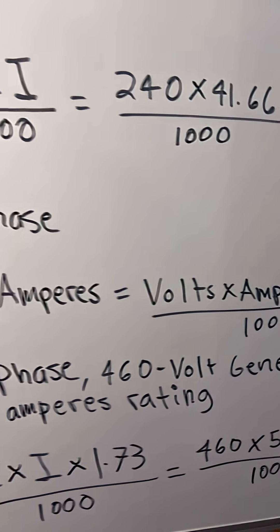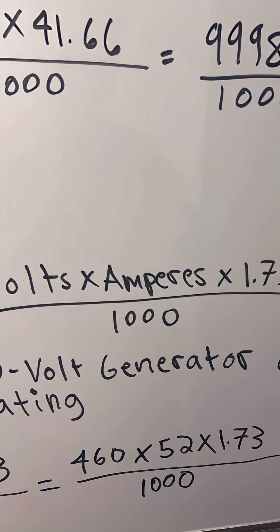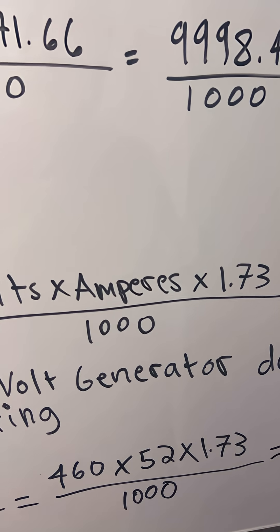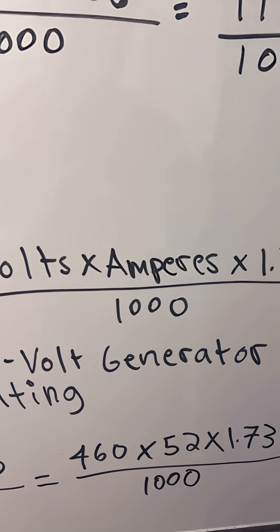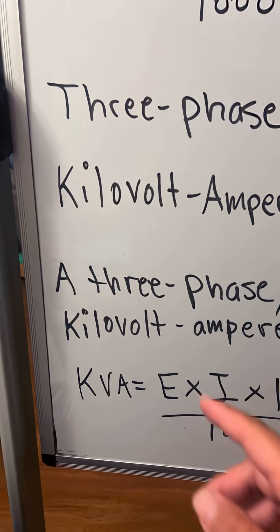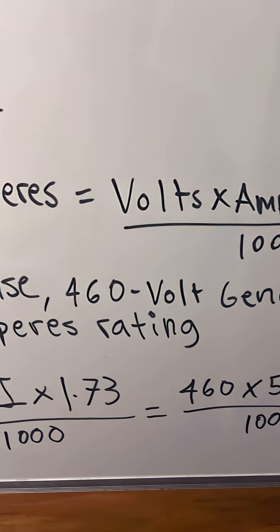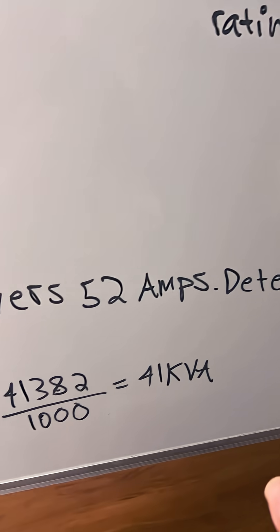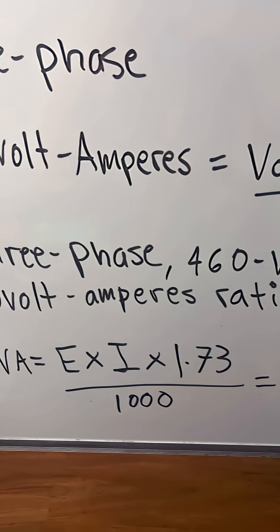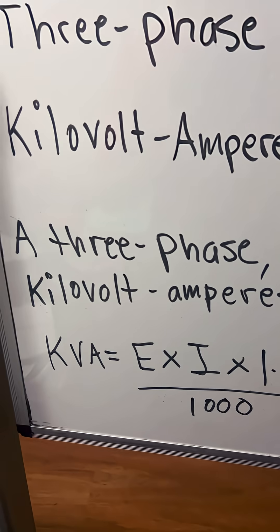kilovolt-amperes, this is the formula: volts times amperes times 1.73, which is the square root of 3, divided by 1000. So a three-phase, 460-volt generator delivers 52 amps. Determine the kilovolt-amperes rating. So we have